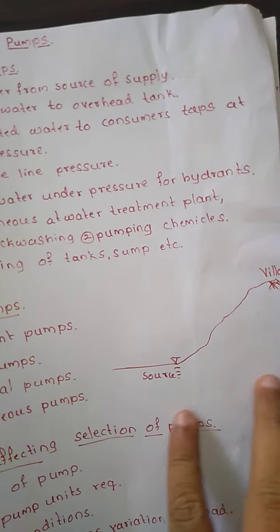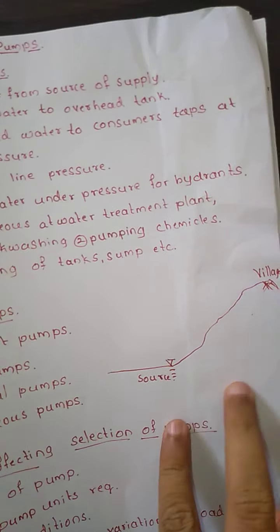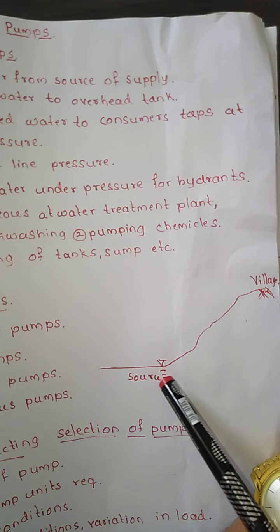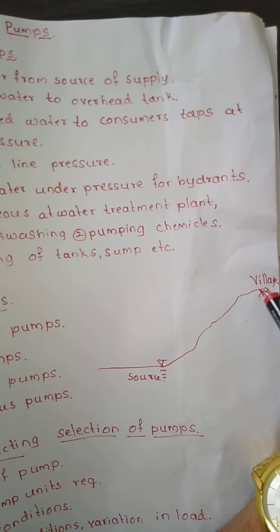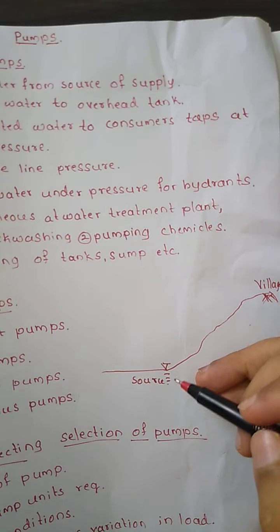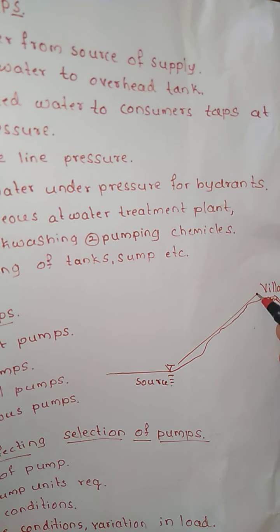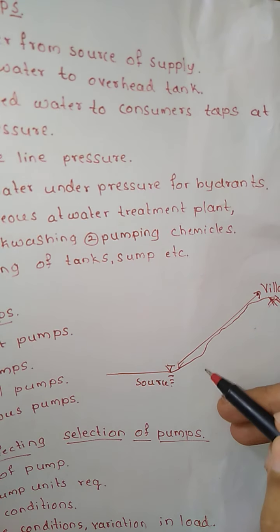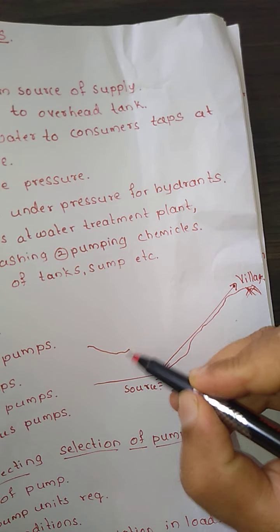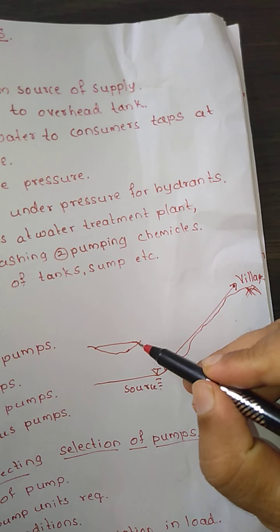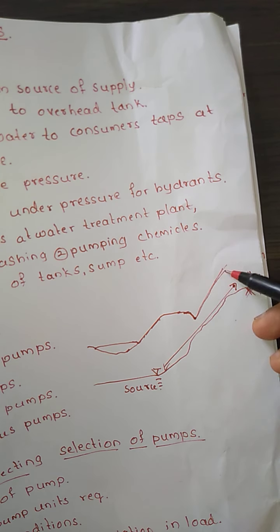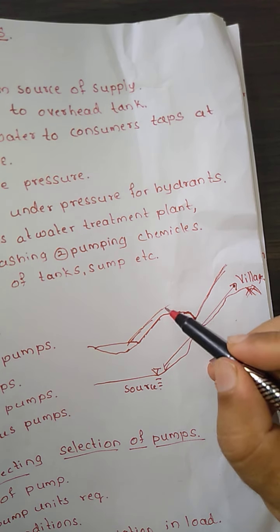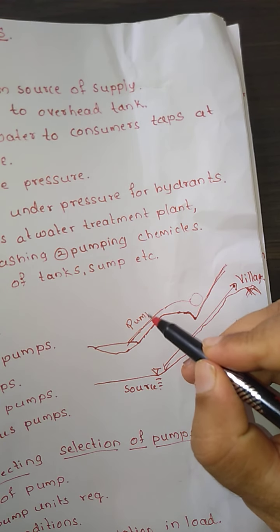Whenever we have the source at the downside and we want to lift the water to a village or town or city situated at the upstream or upside portion, we need the help of pumps. This is one particular condition. Sometimes we are going to have undulations — suppose if your source of water is here, there is an undulation, then the slope increases again. At that particular condition, pumps are a very important aspect.